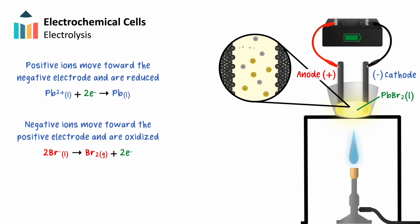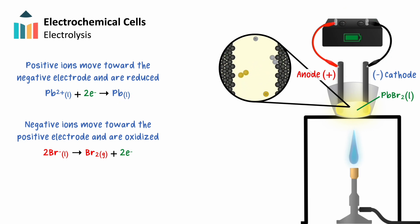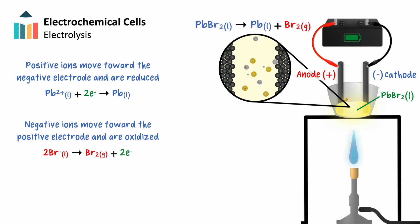In this example, bromine vapor would be collected at the anode and lead would be collected at the cathode. The overall equation for this reaction sees lead(II) bromide turn into liquid lead and bromine vapor.